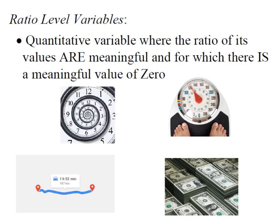Last but not least are ratio level variables. These are quantitative variables where the ratio is meaningful and zero actually means zero — the absence of the characteristic. Examples include weight, time, distance, and money. For instance, 30 minutes is twice as long as 15 minutes, 160 pounds is twice as much as 80 pounds, and 10 miles is five times as far as 2 miles. The majority of data we deal with in both descriptive and inferential statistics are these ratio level variables.